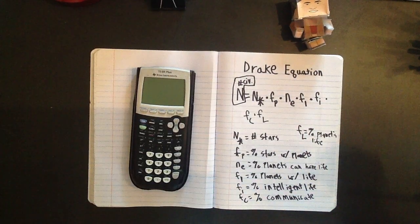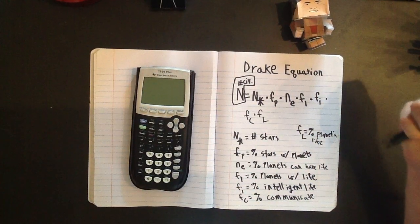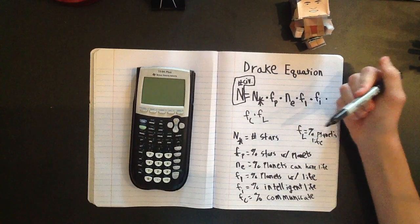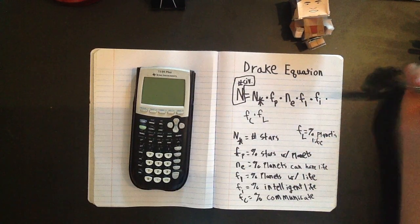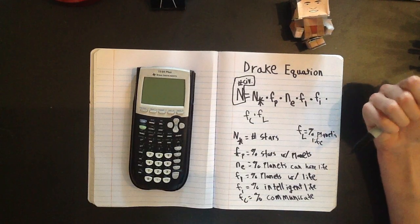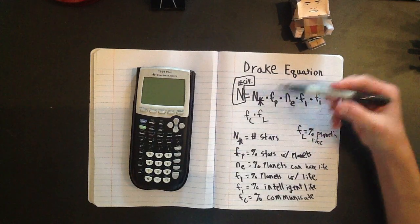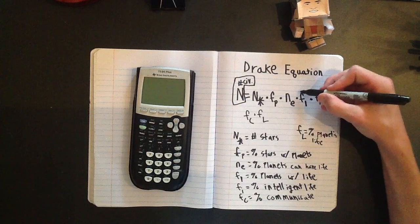Because there are a lot of answers to this. Because the number of stars in our galaxy is easy. The number of stars with planets is sort of hard. The number of planets that can have life, you know, it's pretty hard.